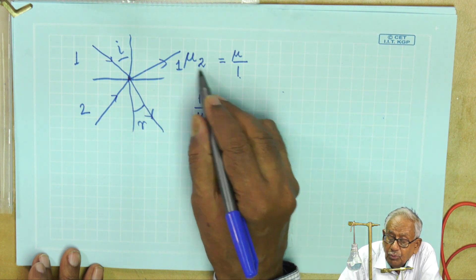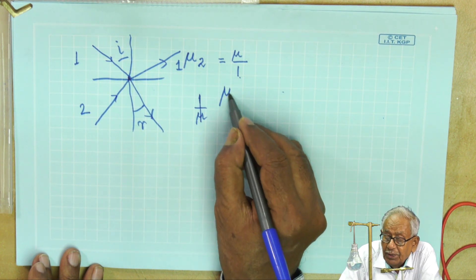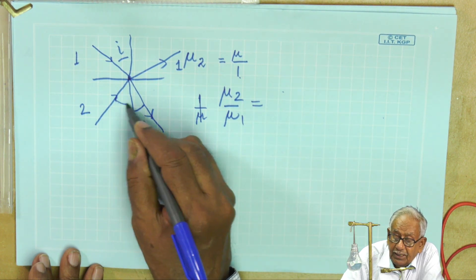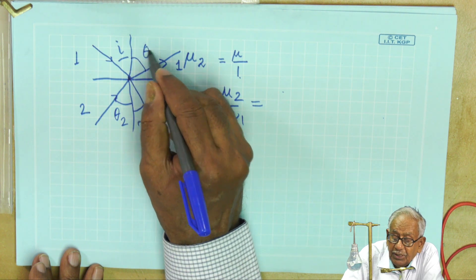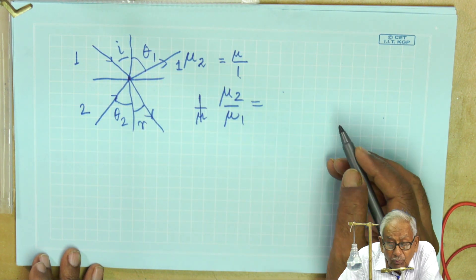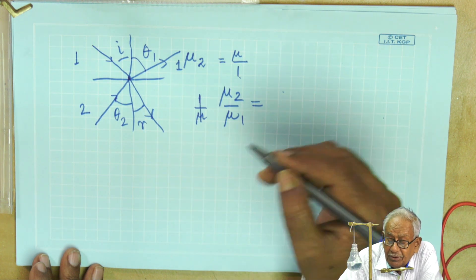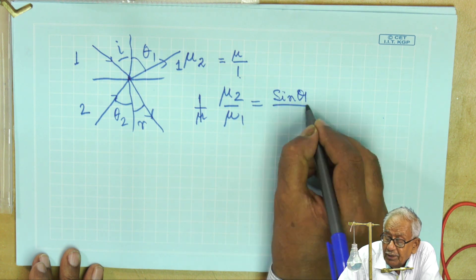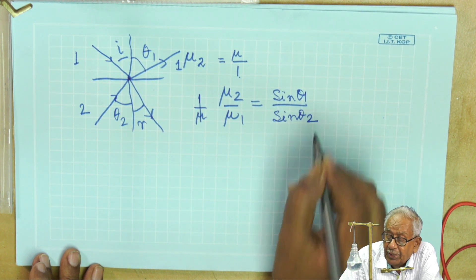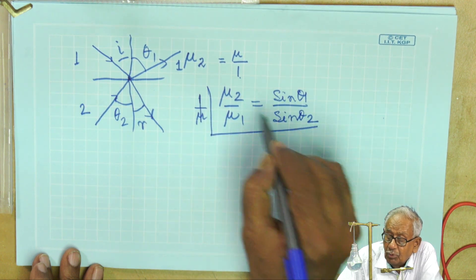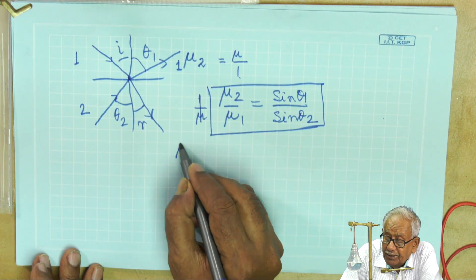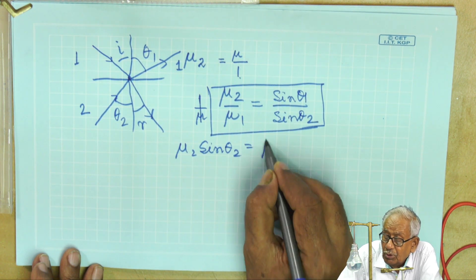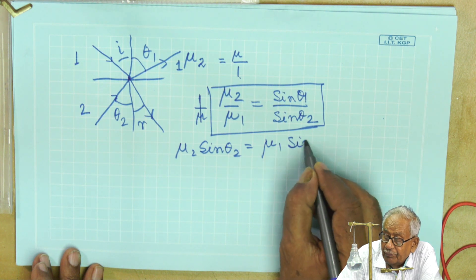Instead of μ₂₁ we can also write it as μ₂ by μ₁. And if this angle is θ₂ and this angle is θ₁, then μ₂ by μ₁, that means this reverse relation, will be sin θ₁ divided by sin θ₂. This is the most general formula. That means we can write μ₂ sin θ₂ is equal to μ₁ sin θ₁.